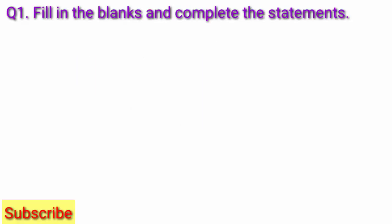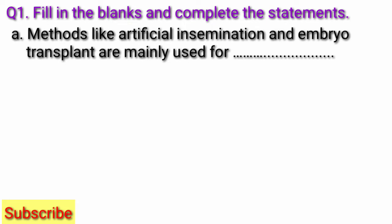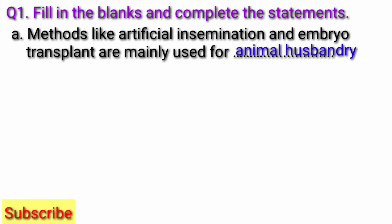Question 1: Fill in the blanks and complete the statements. A. Methods like artificial insemination and embryo transplant are mainly used for — Answer: Animal Husbandry. Methods like artificial insemination and embryo transplant are mainly used for animal husbandry.